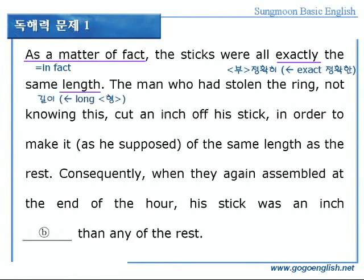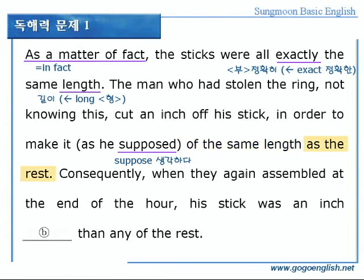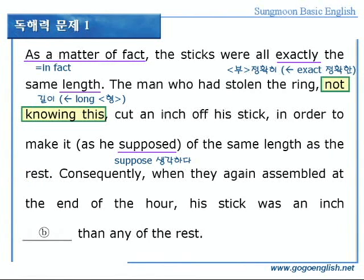length는요, 형용사 long의 명사형으로 길이란 뜻입니다. 계속합니다. the man, 그 사람, who had stolen the ring, 반지를 훔쳤던 그 사람은, not knowing this, 이 사실을 모르고서, cut an inch off his stick, 그의 막대기에서 1인치를 잘라내었다. in order to make it, 그 막대기를 만들기 위해서, as he supposed, 그가 생각하기에, of the same length, 똑같은 길이로, as the rest, 나머지 막대기들과 똑같은 길이로 만들기 위해서 잘라냈다. 먼저, 반지를 훔친 것, 실제 대과거, had stolen, 이 된 것, 유의하시고요.